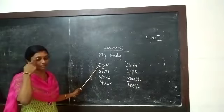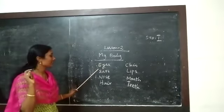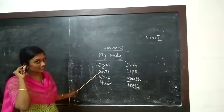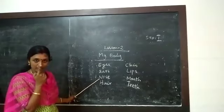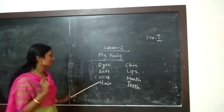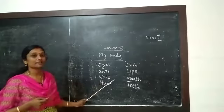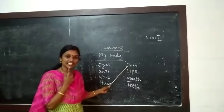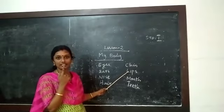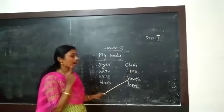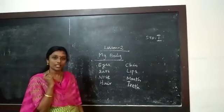Eyes. Eyes. These are my eyes. Say these are my eyes. Then these are my ears. These are my ears. This is my nose. This is my nose. And this is my hair. This is my hair. This is my chin. These are my teeth.